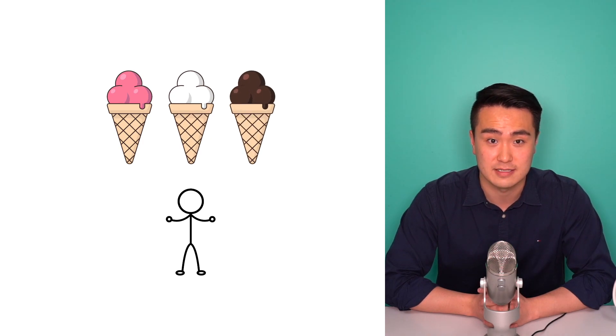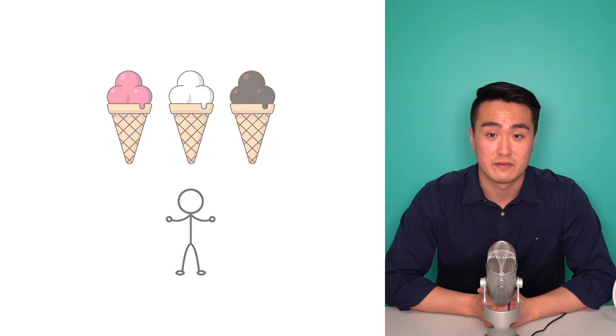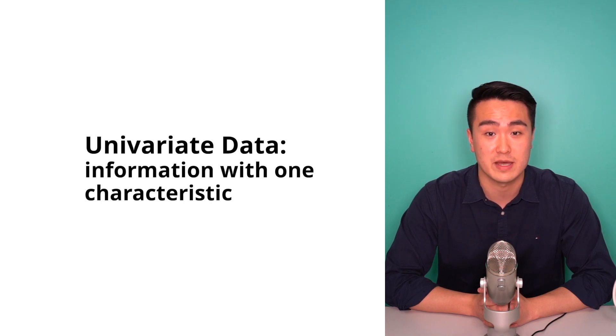For example, a person's favourite ice cream flavour is univariate. Data relates to raw information, so univariate data is just a heap of information that contains one measurable characteristic.